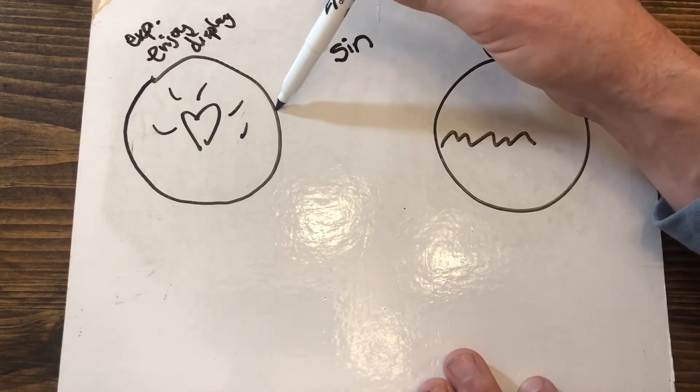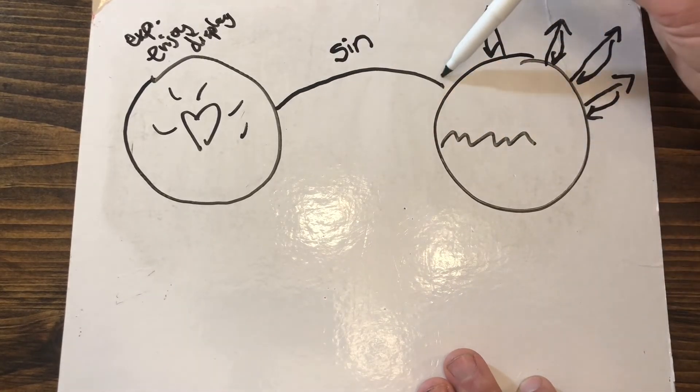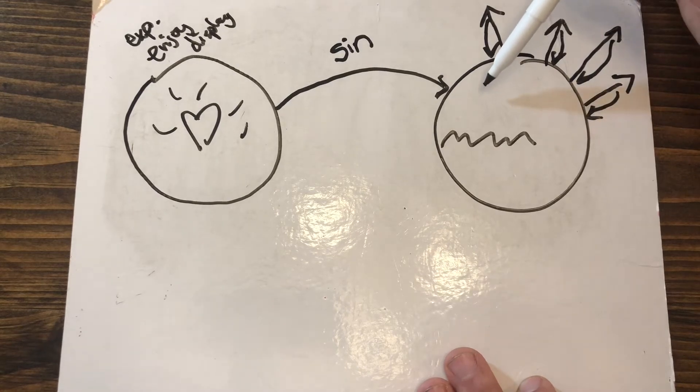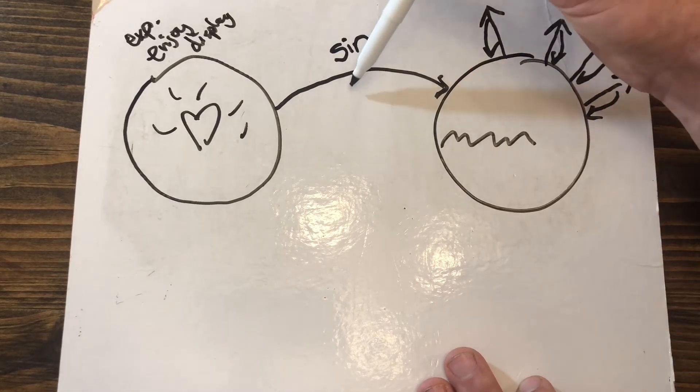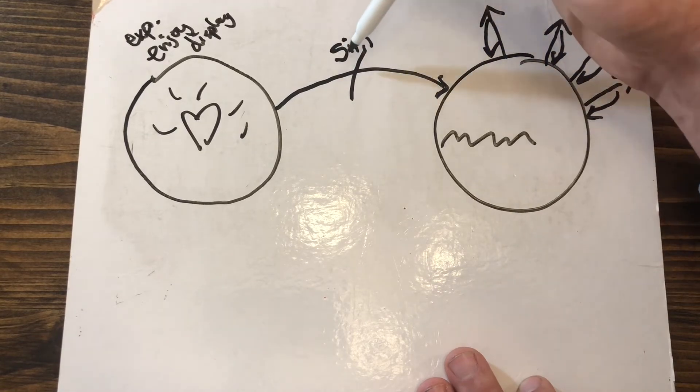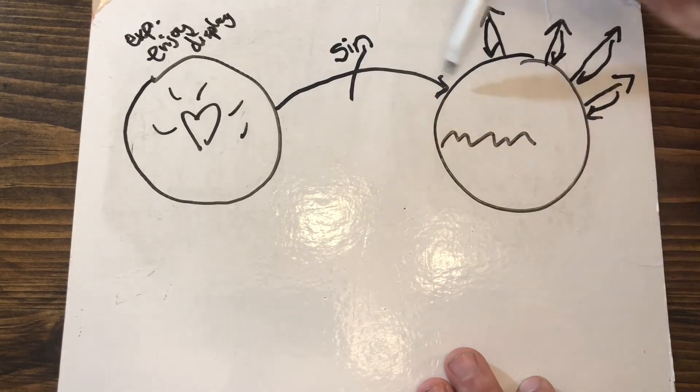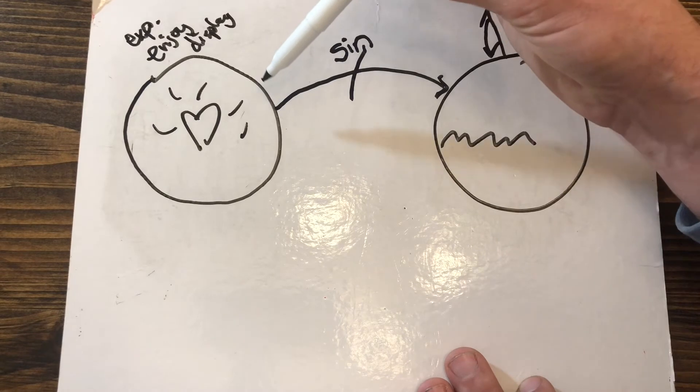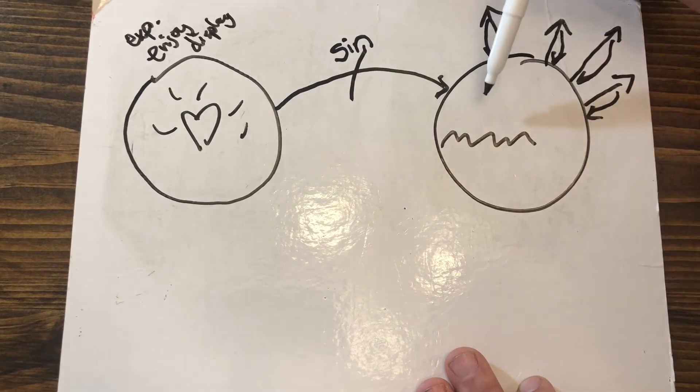And that sin cast us into this world of brokenness that we live in now. You might as well look at that as a wall that cannot be climbed over, cannot be gone around. It is a one-way street that leads us away from this world that God created us for into the brokenness that we're in.